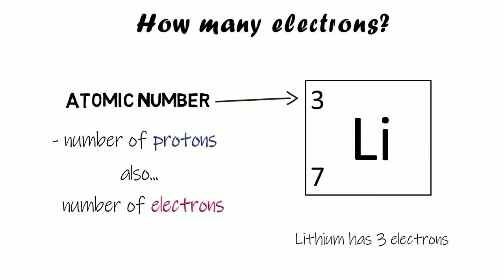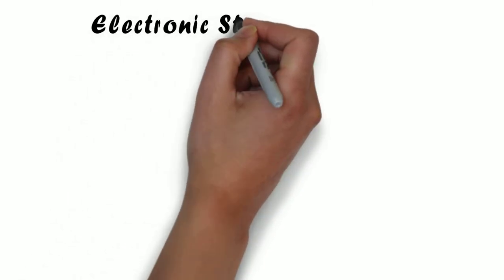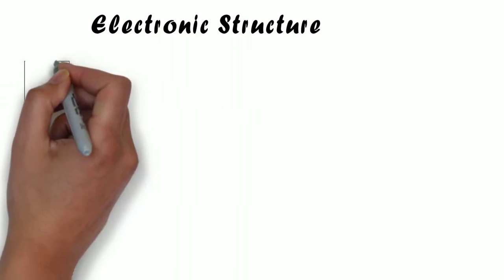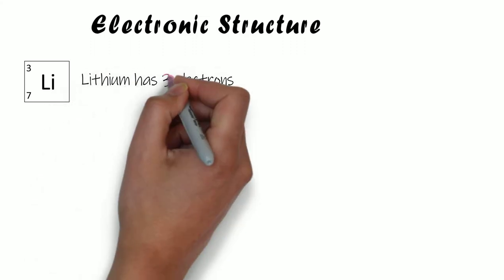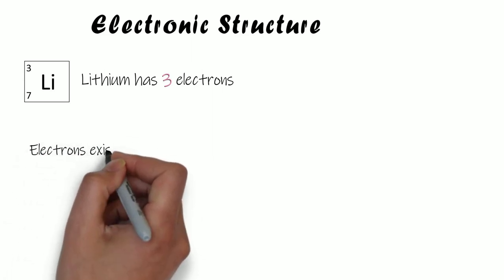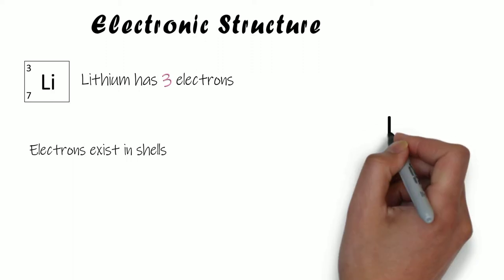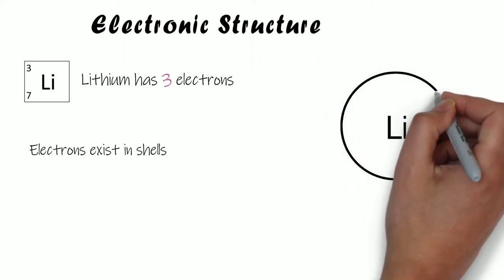Lithium, for example, has the numbers three and seven next to it, which means it has three protons and therefore also three electrons. So we know how many electrons lithium has, but where do we put them? How are they arranged? We have three electrons and we're going to put them in shells. Electrons are always present in shells or orbits — they orbit around the nucleus — and we draw this by drawing a circle.